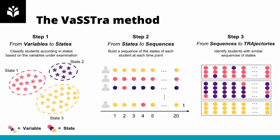The VASTRA method is divided in three steps. The first step is clustering students according to the variables under study into states, so that each student is assigned a state at each time point. The second step deals with building a sequence of states for each student, which represents the evolution of their states throughout time. The third and last step is the identification of students with similar sequences of states, or in other words, who follow similar trajectories.